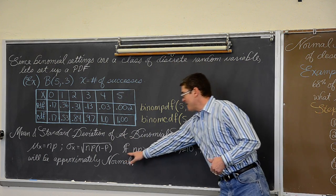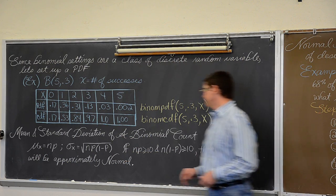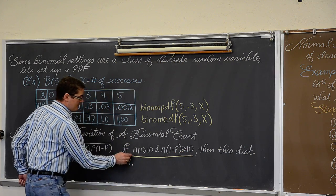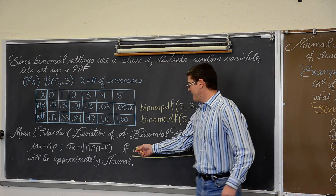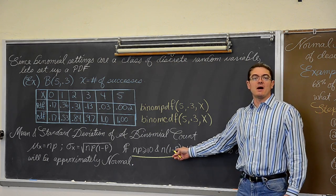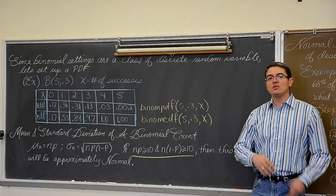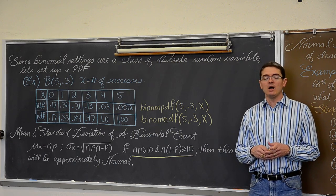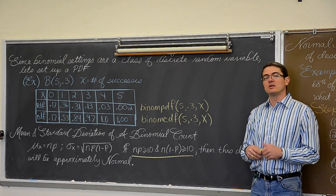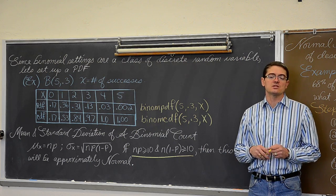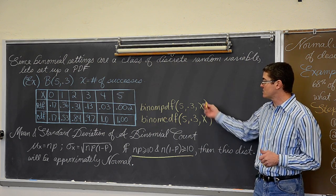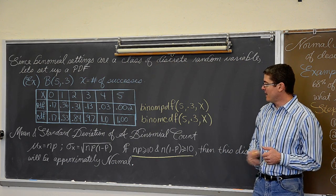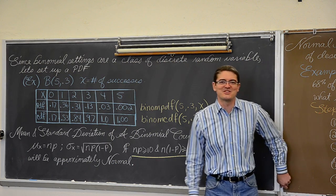Well, the normality check for a binomial setting is right here. If n times p is greater than 10, and n times one minus p is greater than 10, then your sample is large enough for your binomial distribution to be approximately normal. Thus, you can let the bell curve in these z-square calculations approximate your answers instead of getting the exact forms that we will get from binomial pdf and binomial cdf. Let's see what that normal approximation looks like.